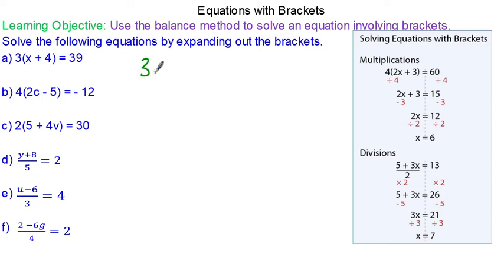We have 3 lots of x plus 4 equals 39. Now there are two ways we can do this. The first way is to expand the brackets.